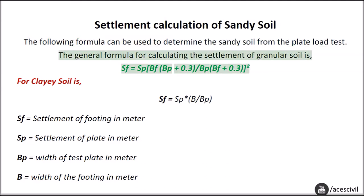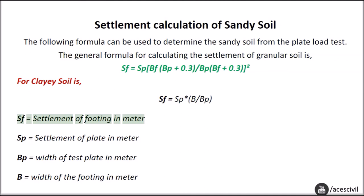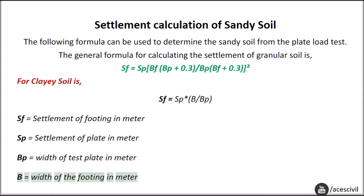The general formula for calculating the settlement of granular (sandy) soil is: SF = SP × [(BF + 0.3) / (BP + 0.3)]². For clayey soil, the formula is: SF = SP × (B / BP). Where SF = settlement of footing (m), SP = settlement of plate (m), BP = width of test plate (m), and B = width of the footing (m).